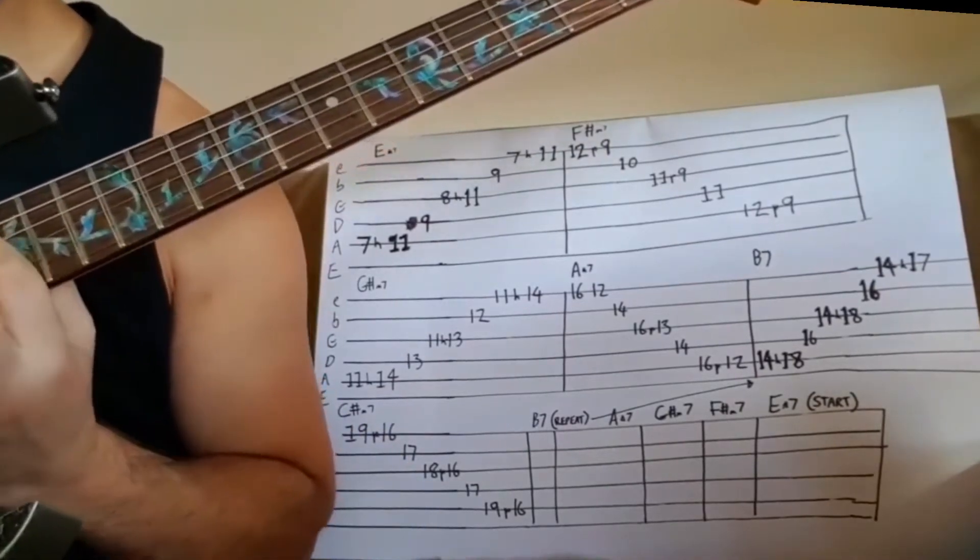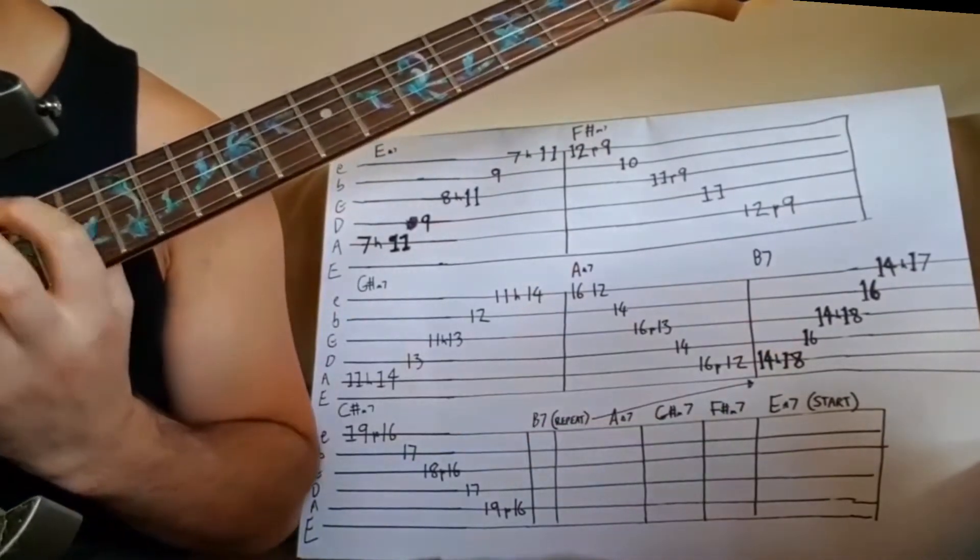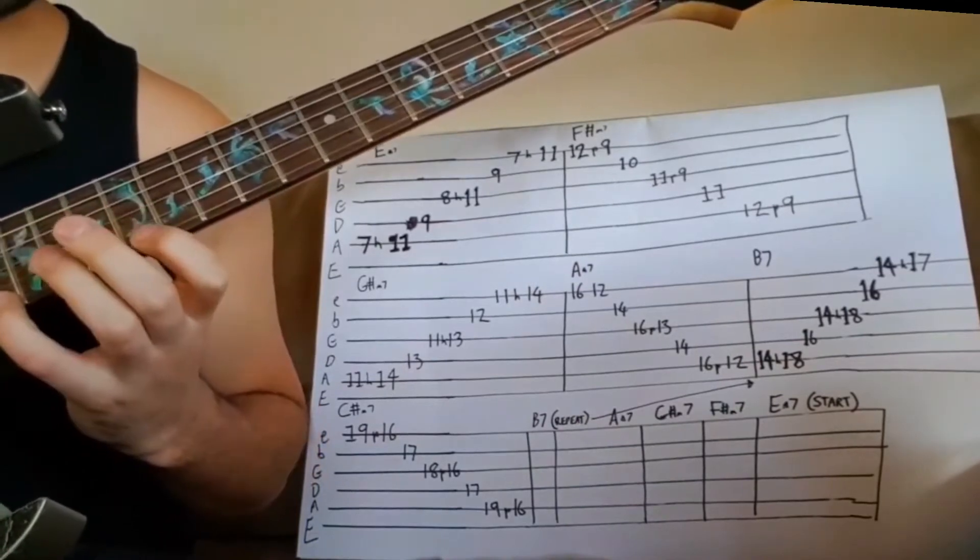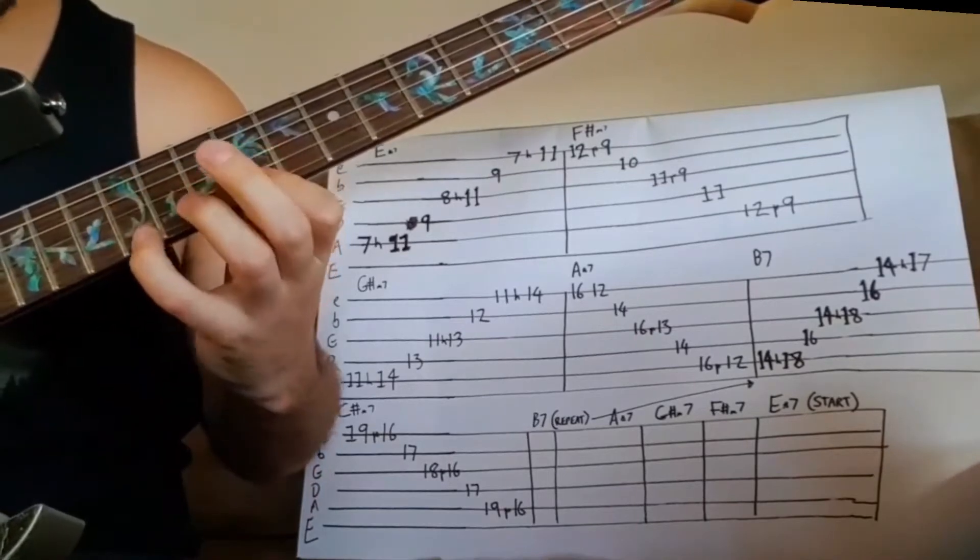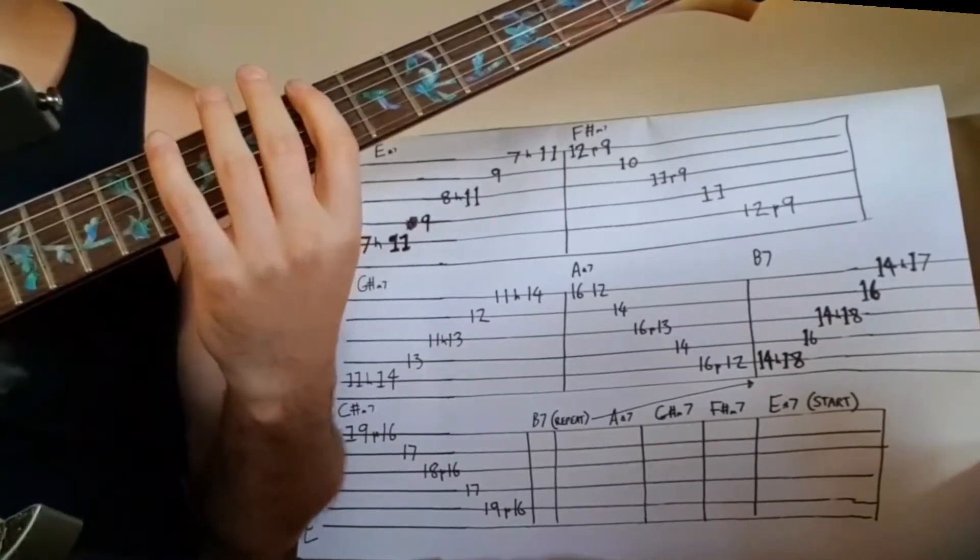Down C sharp, then back to B7, back to A, back to G sharp, back to F sharp, back to the start.